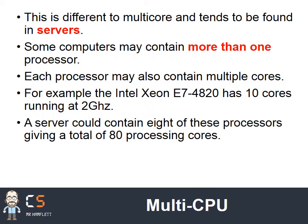Multi-CPUs: this is where I have a single computer but inside it I have lots of processors. These tend to be servers. A server will have multiple processors inside it, and each processor itself might also have multiple cores. For example, the Intel Xeon — the CPU that tends to be used in servers — has 10 cores each running at 2 GHz. So if I had 8 of them, I could have 80 processing cores. Servers can therefore have a very high amount of processing cores through lots of CPUs.